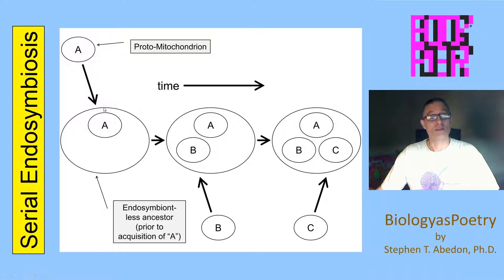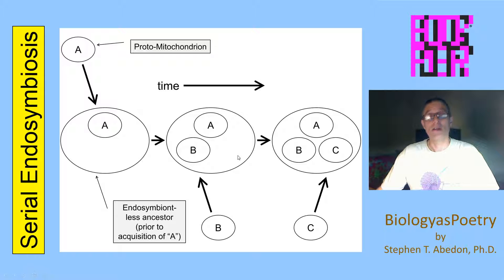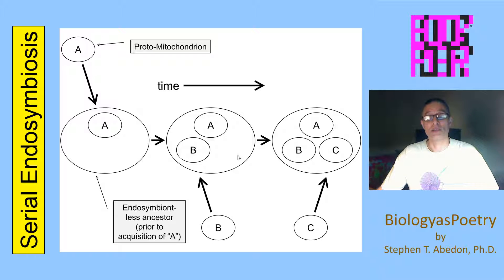The larger cell could be a eukaryote — now a mitochondrial eukaryote. The acquisition of a second endosymbiont can then occur, and this second endosymbiont could, for example, be a plastid — for example, a cyanobacterium giving rise to a eukaryotic algae cell.